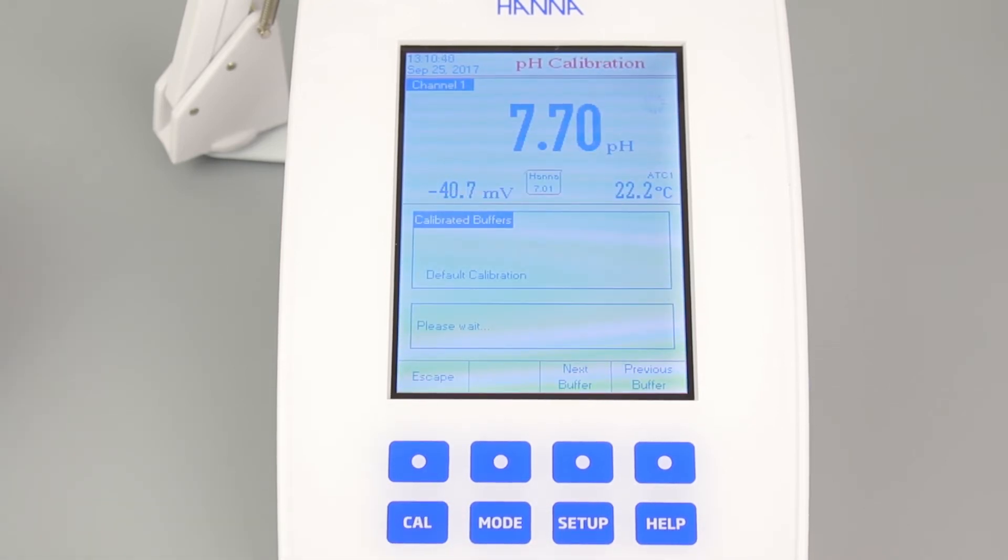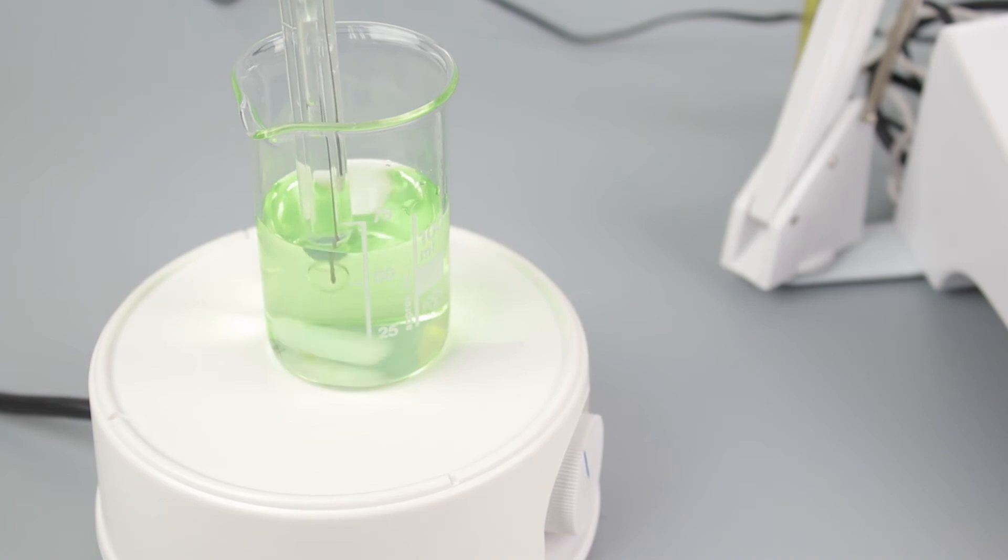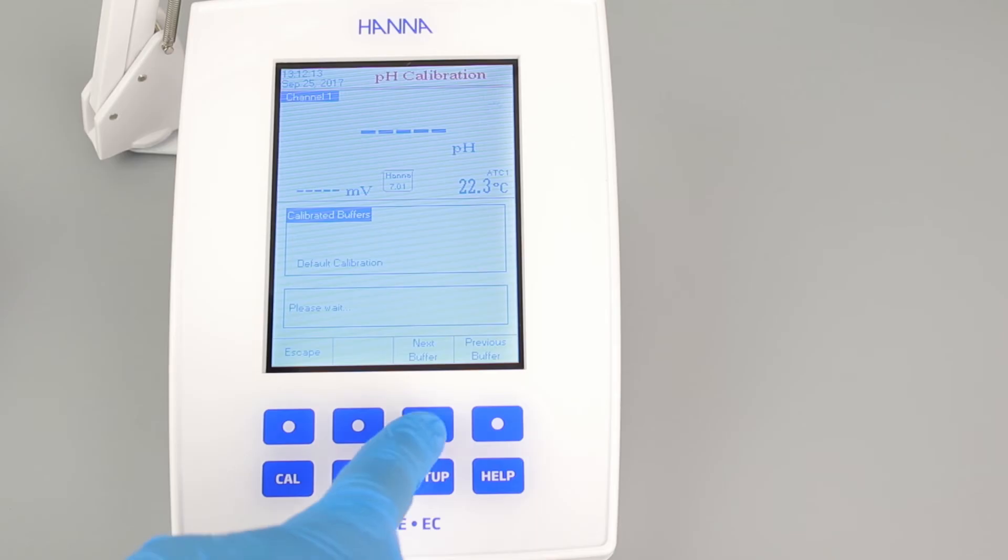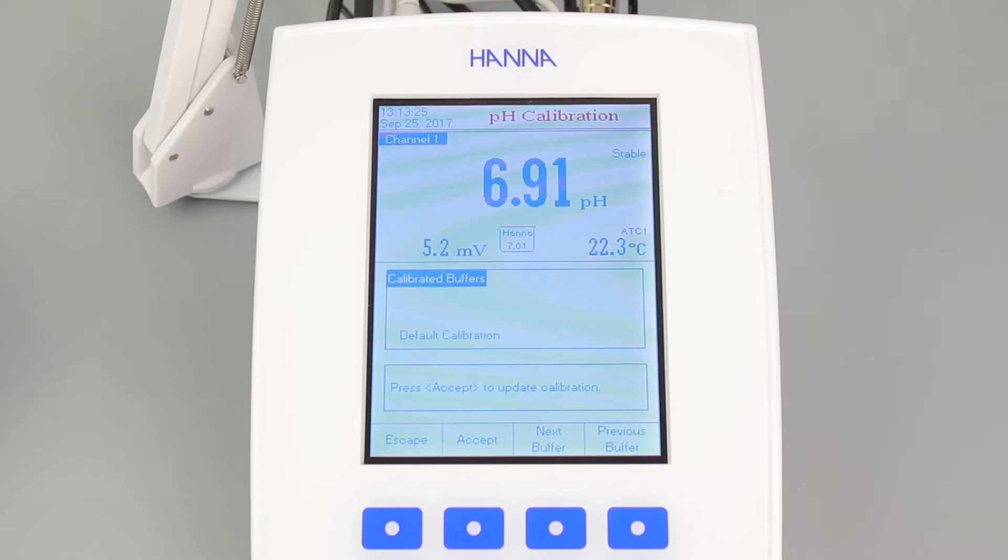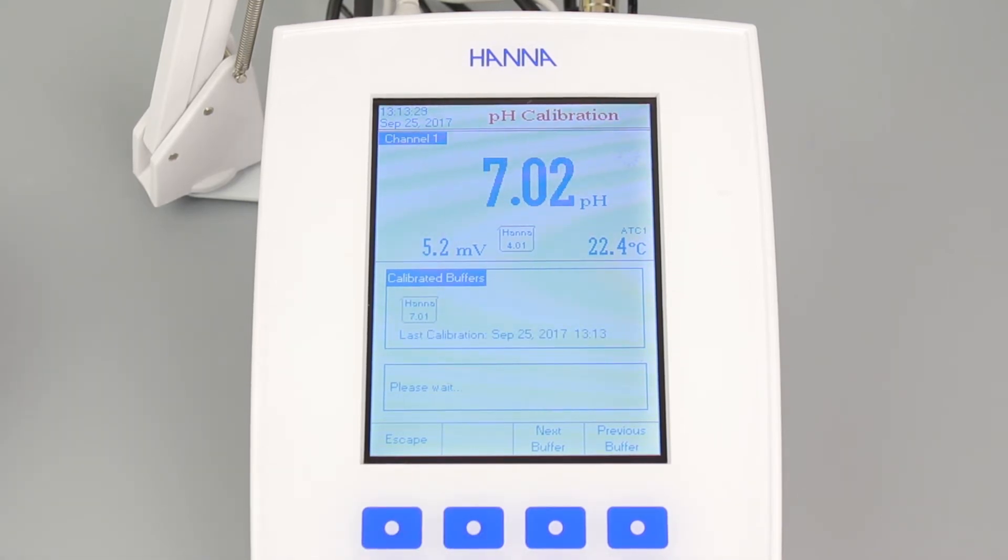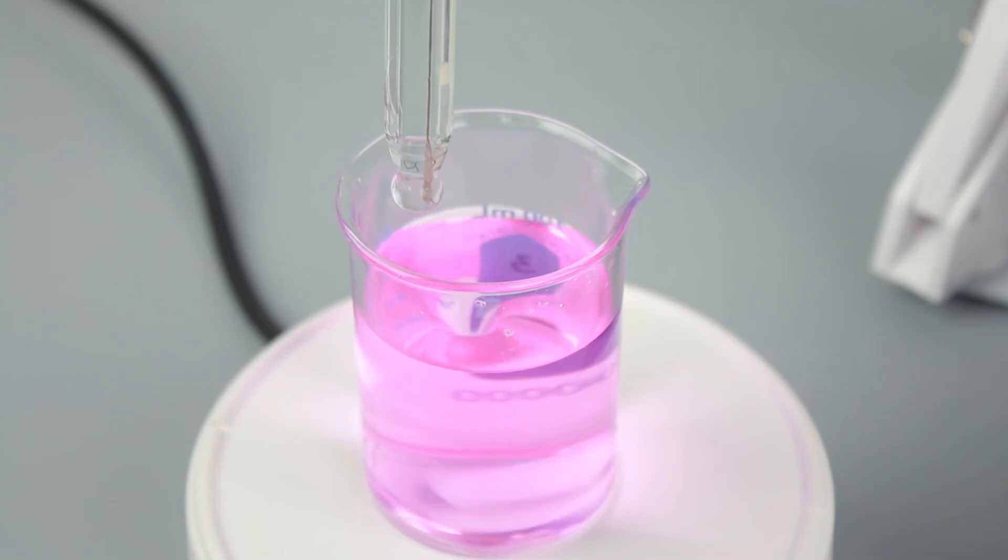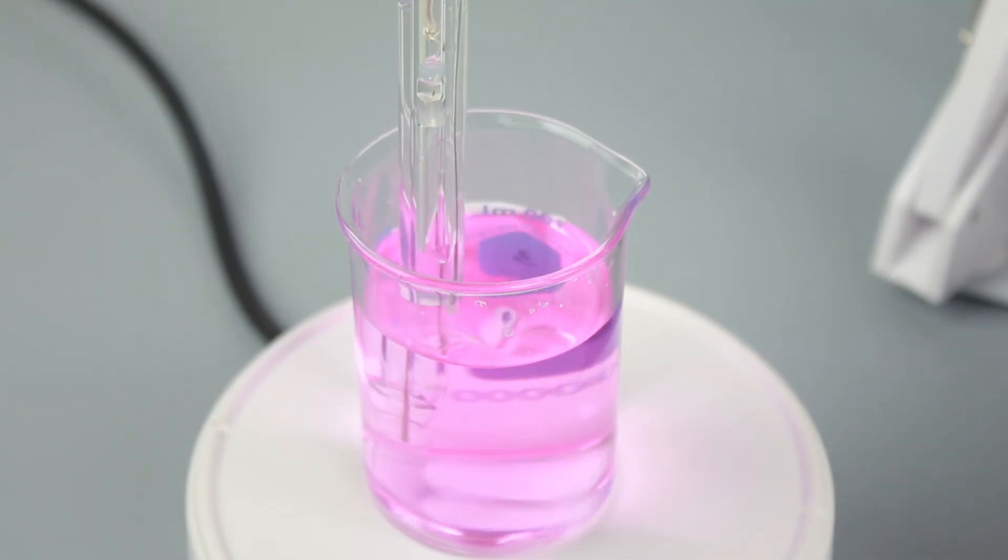To calibrate your meter, press the CAL button. Then place the pH electrode into your buffer. Make sure the sample is stirring. Use the next buffer and previous buffer buttons to match the value you're using. Once stable, press accept and the calibration will be saved. Your meter can calibrate up to 5 points. Place the electrode in your next buffer or hit escape when you have finished calibrations.